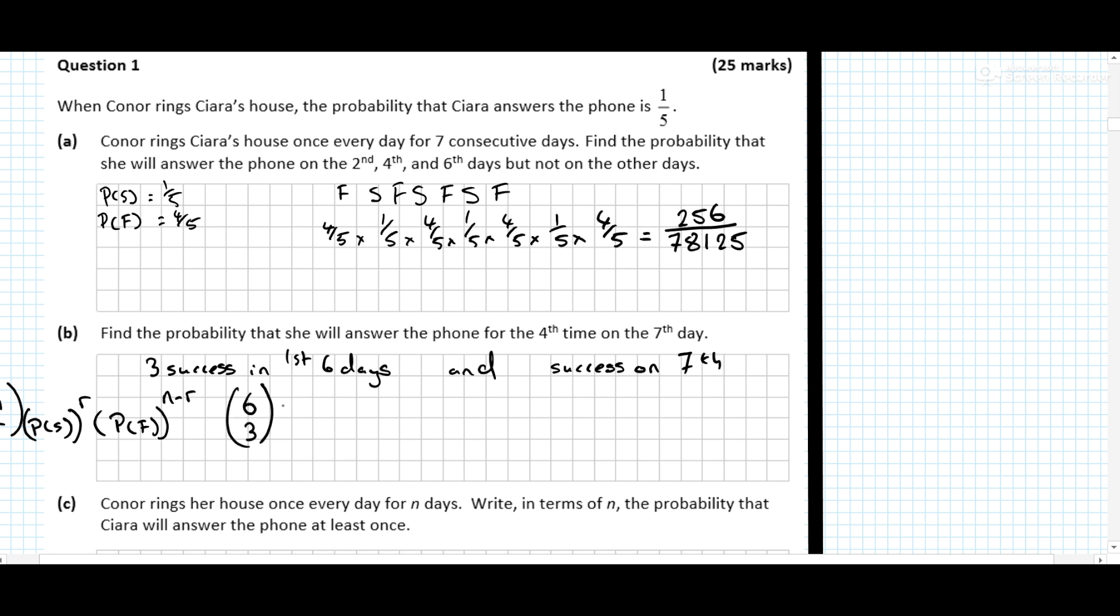6 choose 3, the probability of success was 1 over 5, 4 over 5 to the power of 3, so that deals with that section there. And means multiply, probability of success is 1 over 5. Multiply it all out, and we get 256 over 15,625.